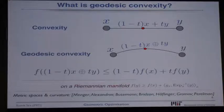Now, if instead of being in a space where you have straight lines, you are in a space where the shortest paths joining two points are curves, and you can parametrize how far along this curve you have moved, then you can extend the definition. You can extend the definition of convexity to this curved setting.